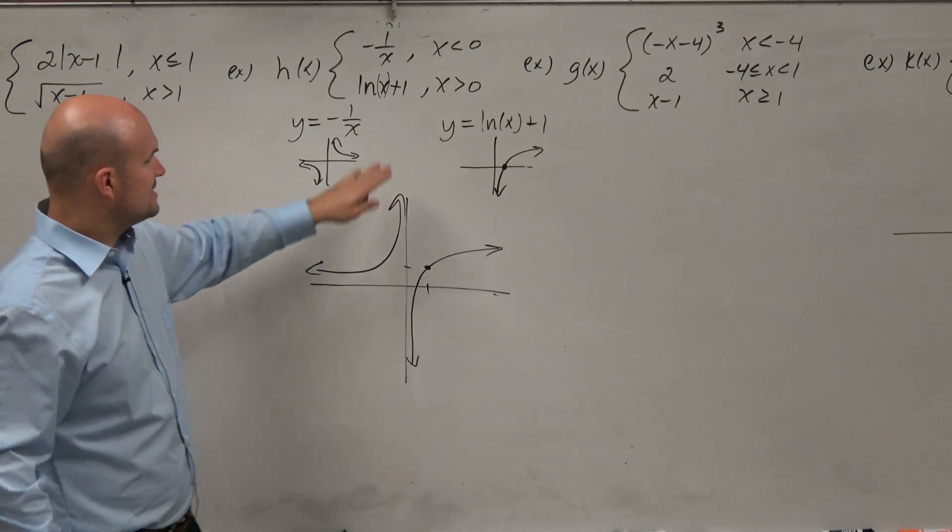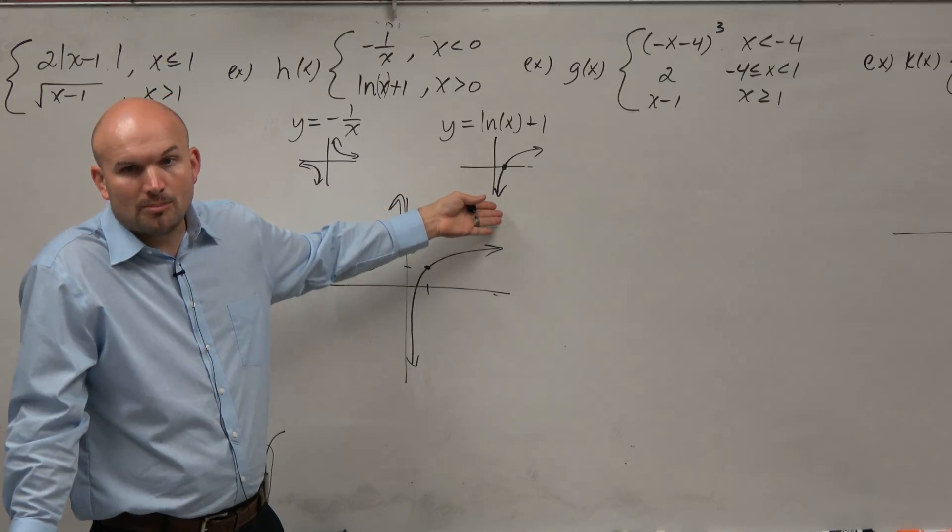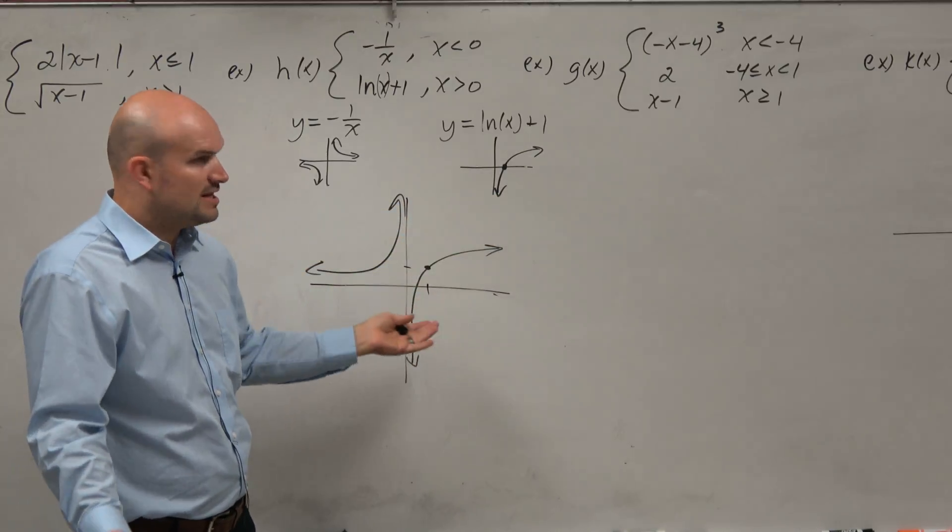Now, in this one it says, only graph this function for x values greater than 0. Well, that's nice because the graph is already for all positive values. So we're good. Then we are done.